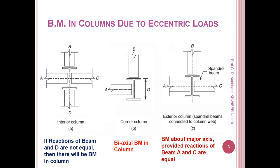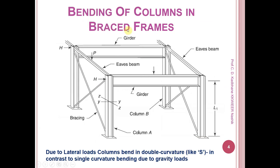These columns produce axial force as well as bending moment, making them beam columns when reactions are not the same. Next, bending moment of columns in braced frames. In the case of braced frames, due to lateral loads, columns bend in a double curvature S-shape. The ends are prohibited from movement by bracings, so the S-shape forms — this is a double curvature shape.